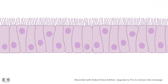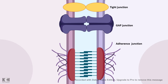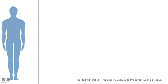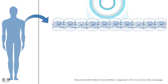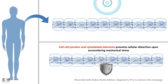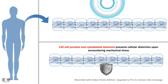In an epithelial sheet, the cells are connected to each other via cell junctions of different types — adherence junction, gap junction, and tight junction. Each type has its own function, but a combination of these junctions ensures that whenever we experience some kind of mechanical stress, the cell junctions and their coordination with cytoskeletal elements prevents any kind of cellular distortion upon encountering mechanical stress.